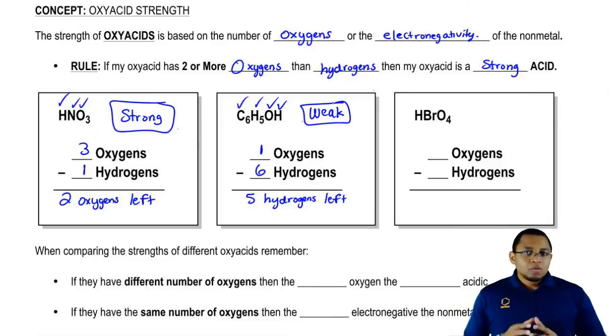And remember, this could not be a base. OH does not make something a base. OH is only a base if it's connected to metals. Since carbon and hydrogens are not metals, this could not possibly be a base.